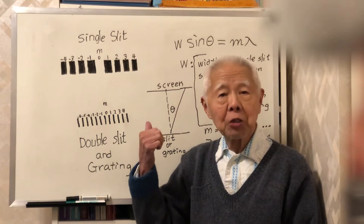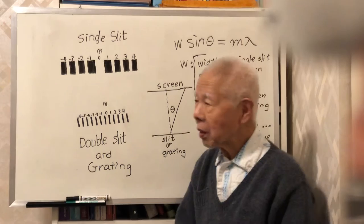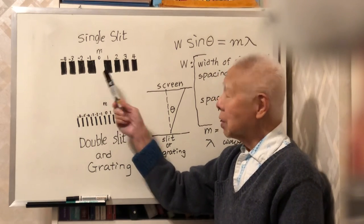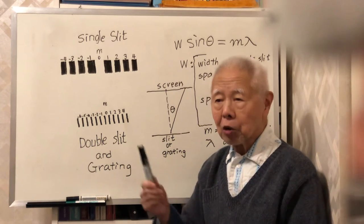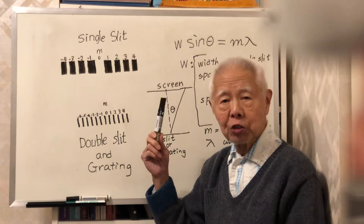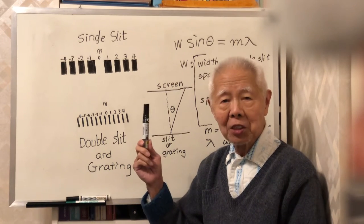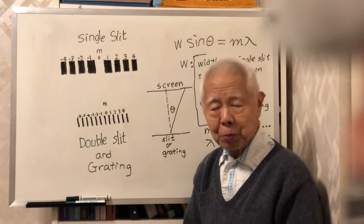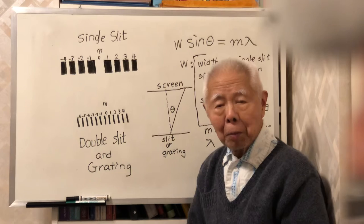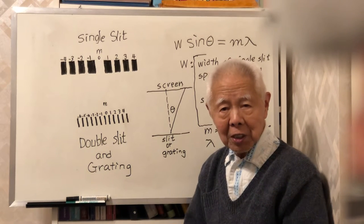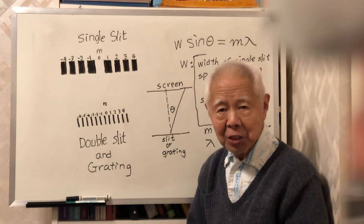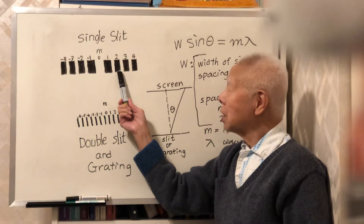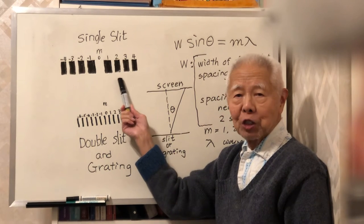Let's look at the pattern you get for a single slit diffraction. The pattern from a single slit diffraction looks like this. There is a bright center fringe, and also you have a series of bright fringes on both the left and right side. However, there is a special feature: the central bright space is wider than the bright space beside the center. The width of the center bright fringe is wider than the bright fringes on the sides.